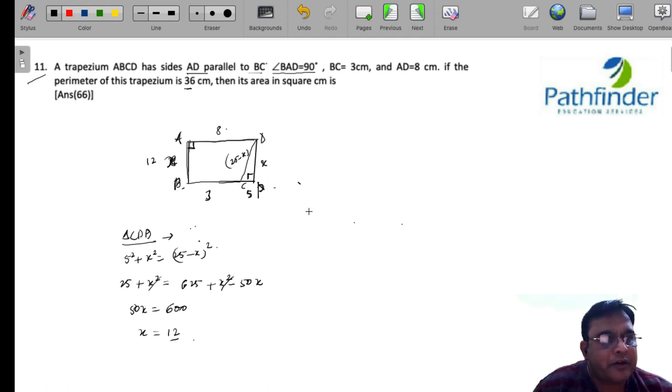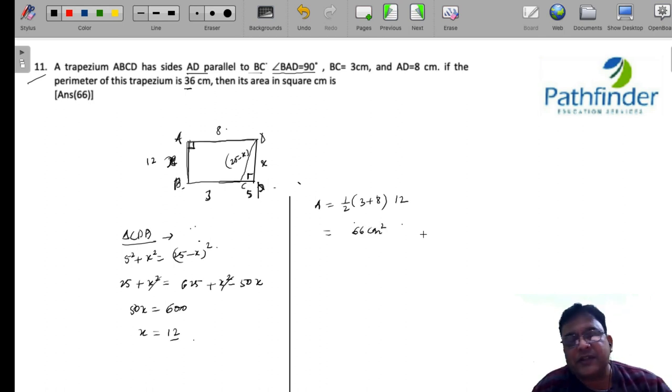Now, the area of a trapezium, because we are required to calculate the area of trapezium, must be half sum of parallel sides. So, half of 3 plus 8 multiplied by the height, that is X which we have just calculated as 6. So, 66 centimeter square is your final area.